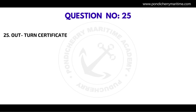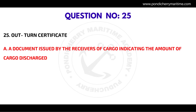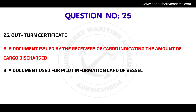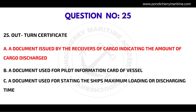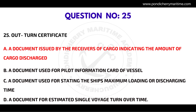25th question. Outturn certificate — a document issued by the receivers of the cargo indicating the amount of cargo discharged. Option B, a document used for a pilot information card of vessels. Option C, a document used for stating the ship's maximum loading or discharge time. Option D, a document for estimated single voyage turnover time. Correct answer is option A, a document issued by the receivers of the cargo indicating the amount of cargo discharged.